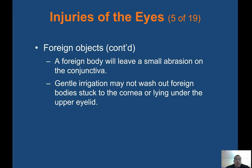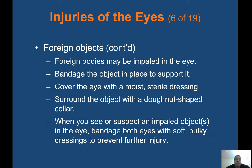A foreign body will leave a small abrasion on the conjunctiva. Gentle irrigation may not wash out a foreign body stuck to the cornea or under the upper eyelid. Foreign bodies may be impaled in the eye — bandage the object in place to support it, cover the eye with a moist sterile dressing, and surround the object with a donut-shaped collar. When you see or suspect an impaled object in the eye, bandage both eyes with soft bulky dressings to prevent further injury. If you have something impaled in one eye or an injury to one eye, you're going to bandage the other eye as well.